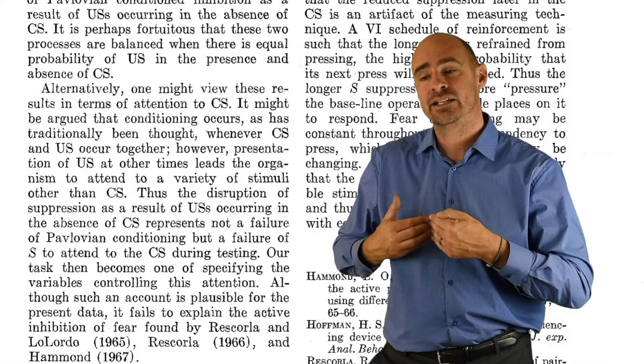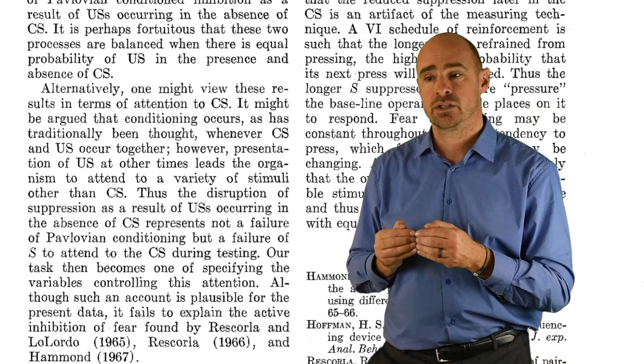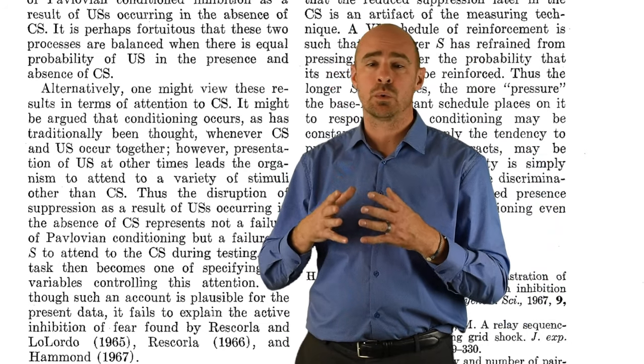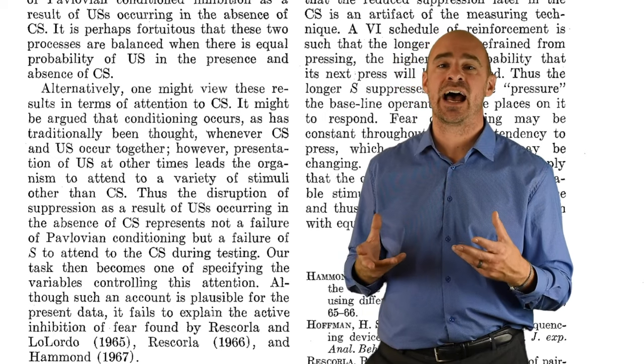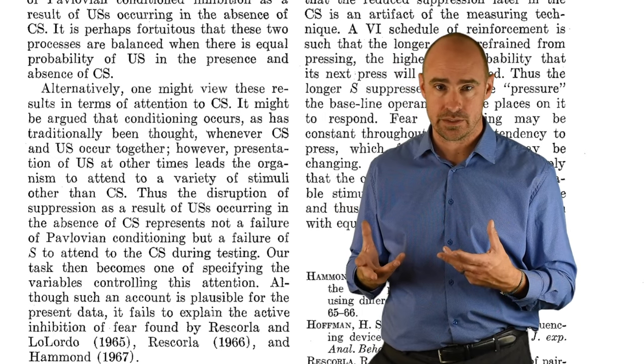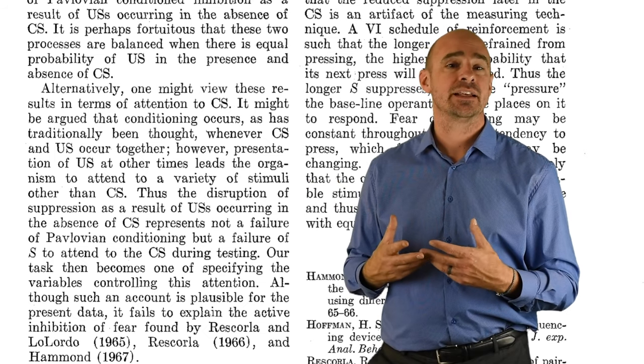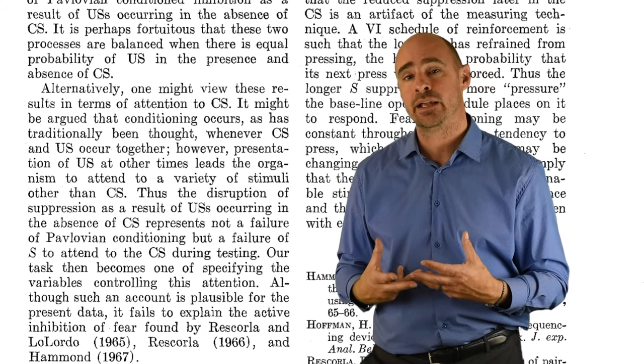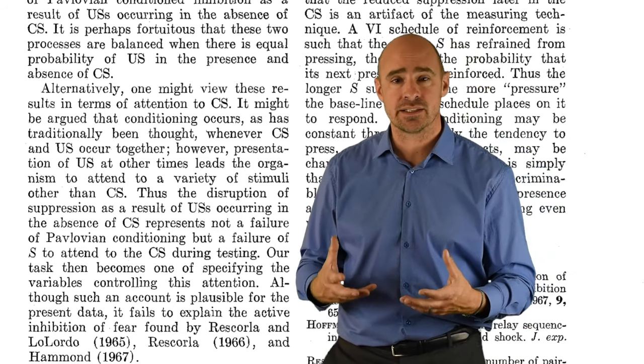So what I also like to talk about here is that contingency, that contingent relation between the CS and US is what develops the conditioning. So if you're trying to develop a new reinforcer or what have you, or work with classical conditioning, make sure that your CS is highly predictive of the US. If not, it's going to take you a lot more trials. It's going to take a lot more time and it's going to be more challenging to get consistent conditioning if you're not making sure that that CS predicts the US.